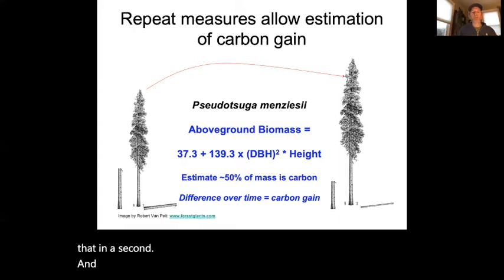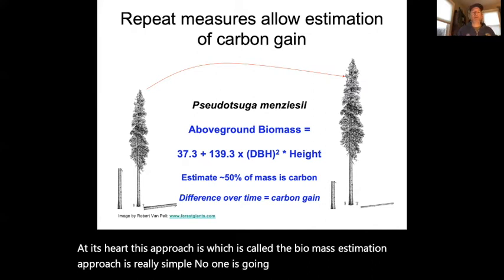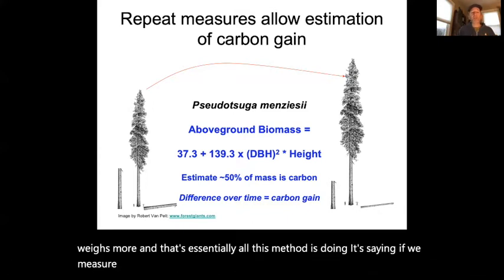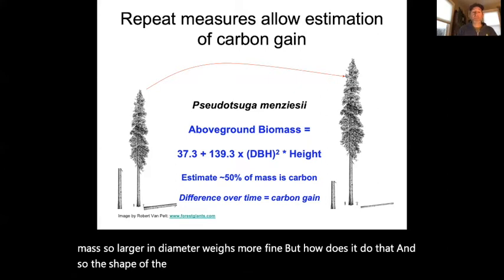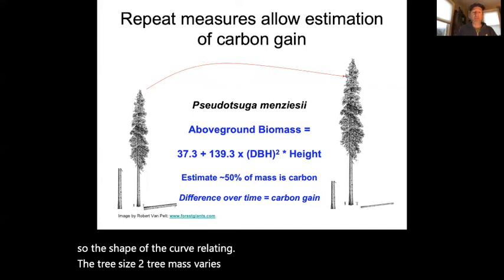At its heart, this approach — called the biomass estimation approach — is really simple. No one will be surprised that a larger tree weighs more, and that's essentially all this method is doing: if we measure a tree as being larger, we estimate it to be larger in mass. The shape of the curve relating tree size to tree mass varies among species.